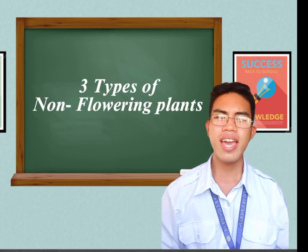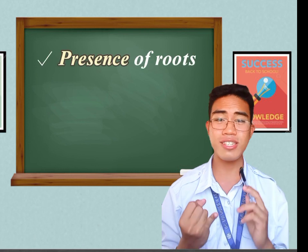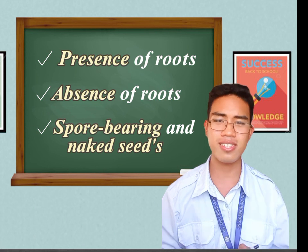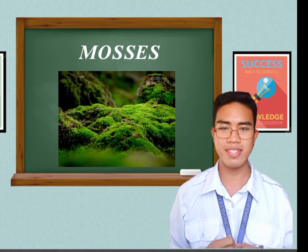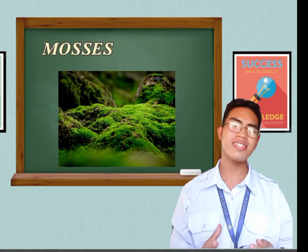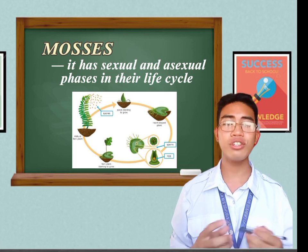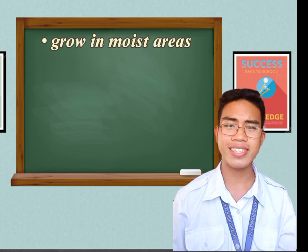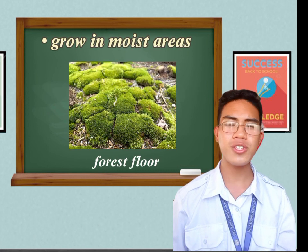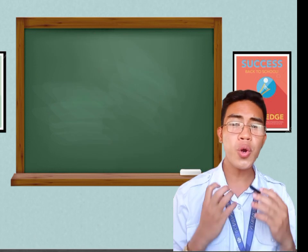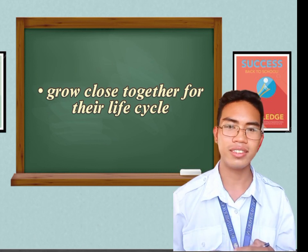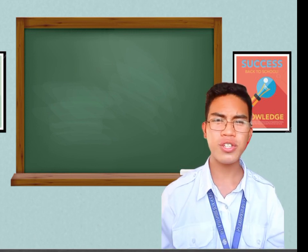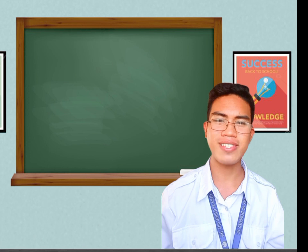There are three types of non-flowering plants, classified based on the presence or absence of roots and whether they bear covered or naked seeds. An example is moss. Mosses have both sexual and asexual stages in their life cycle. They can grow in moist areas like brick walls, forest floors, and the sides of trees, and they must grow close together for their life cycle. To help you fully understand, let's watch a short video clip about the reproduction of non-flowering plants.